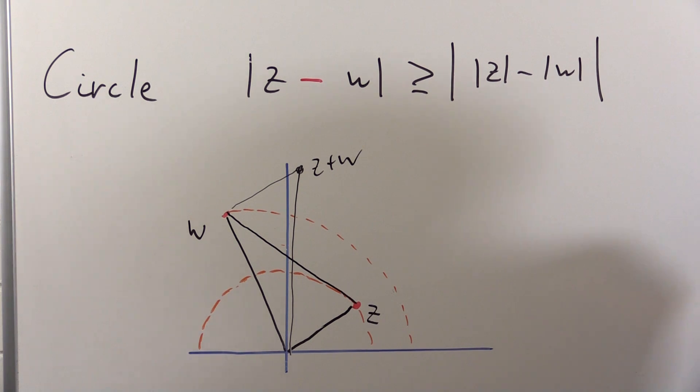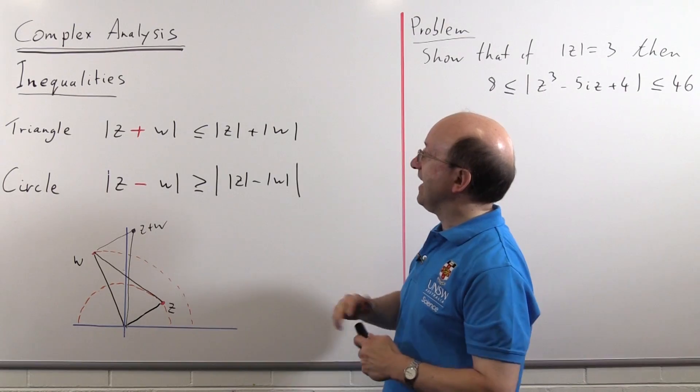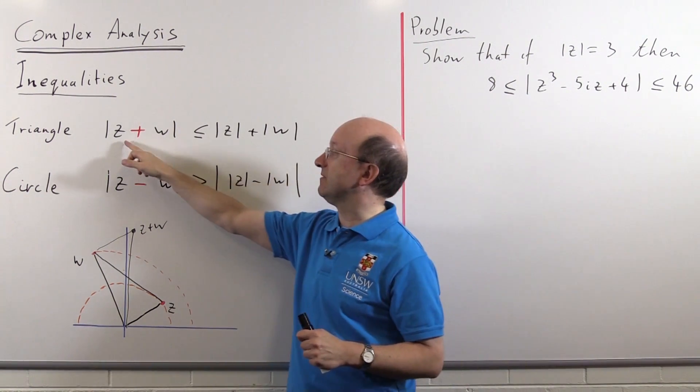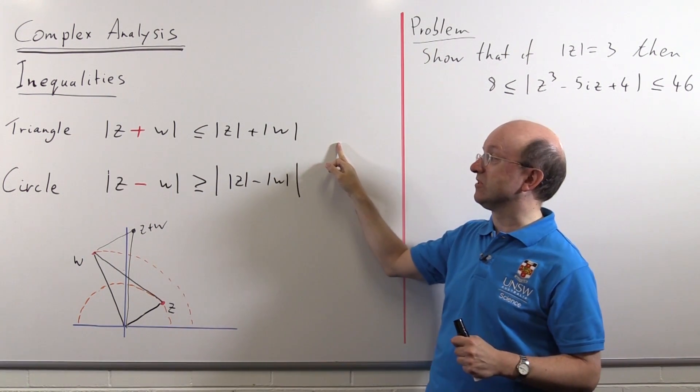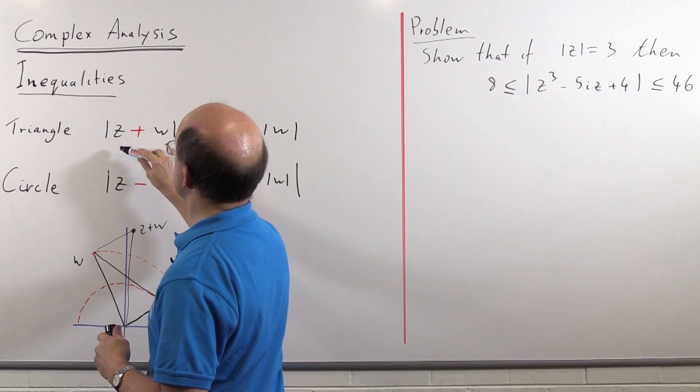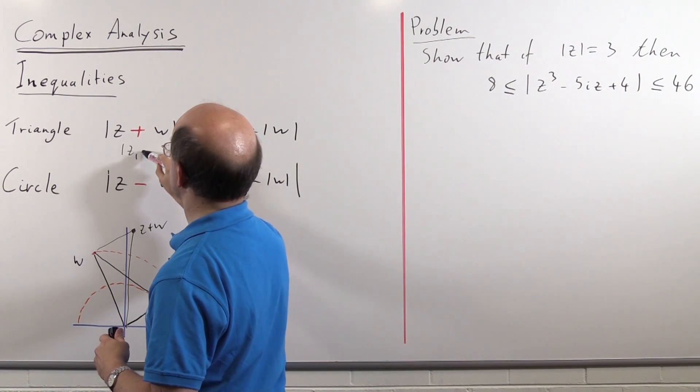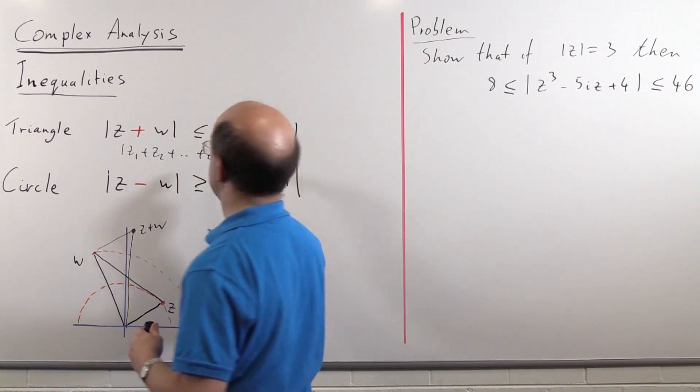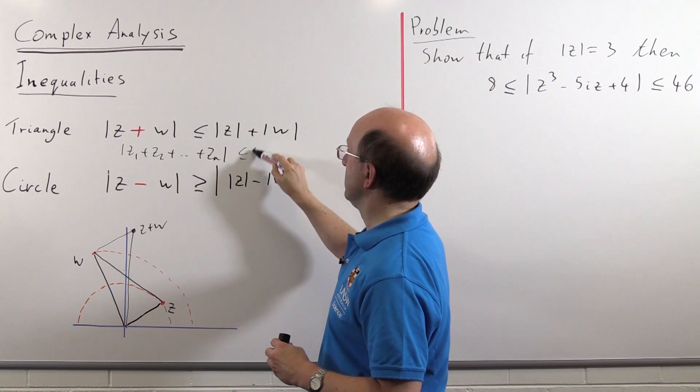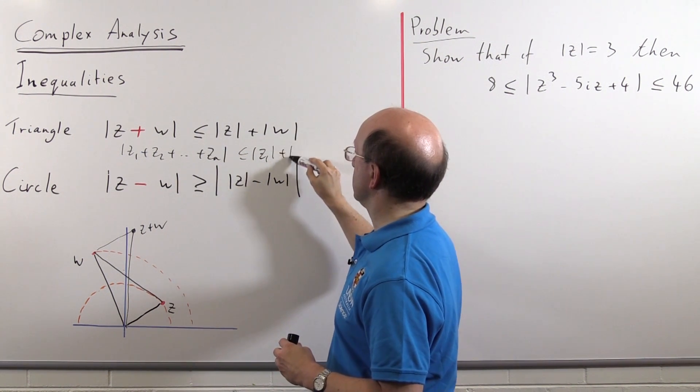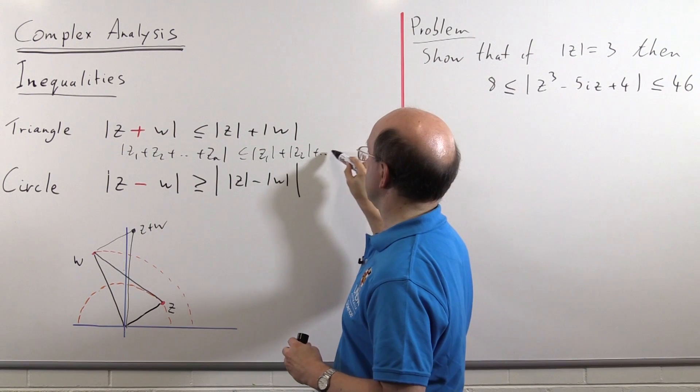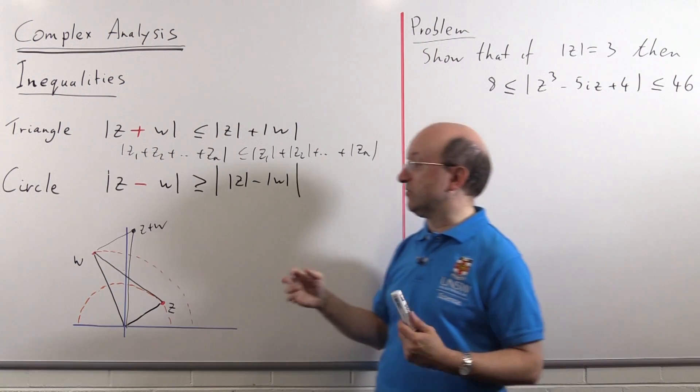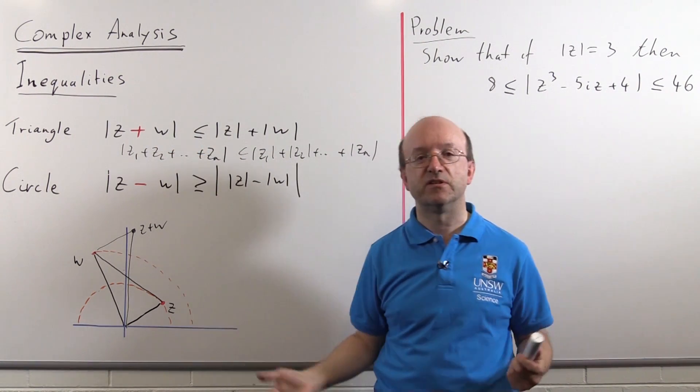One other thing I should mention before we look at an actual problem using these inequalities is that the triangle inequality can be generalized. It's usually written as two complex numbers here, but in fact it could be any number of them. And it would still work. So it could be, you can have mod of z1 plus z2 plus as many as you like. That will still be less than or equal to modulus of z1 plus z2 plus and so on.